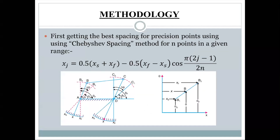This is the Chebyshev spacing equation: x_j = 0.5(x_s + x_f) − 0.5(x_f − x_s) · cos(π(2j − 1) / 2n), where j represents the precision point index. In this case we have used three precision points. x_j gives you the precision point x-coordinates, and correspondingly using the function we can calculate the y-coordinates. These are the points where there are zero errors. x_s indicates the starting point, x_f indicates the ending point of the motion, and n represents the total number of precision points, which in this case is three.